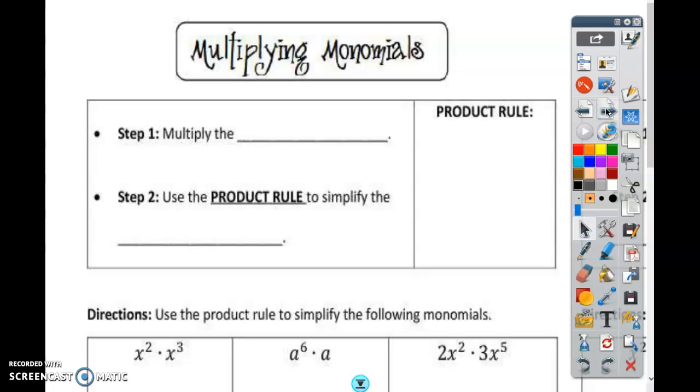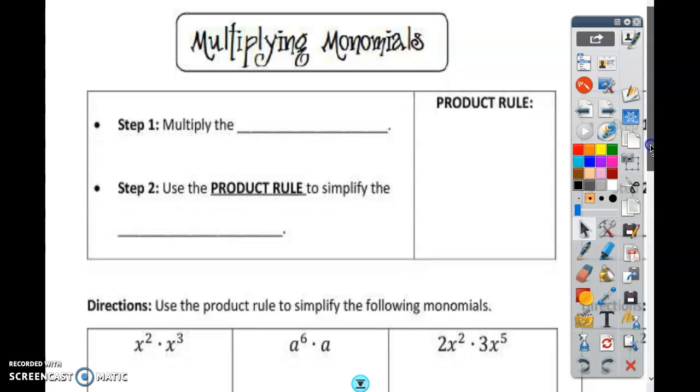Multiplying monomials. We're going to be multiplying exponents. We're going to do the laws of exponents for multiplication. What happens when you're multiplying two things and they have exponents?